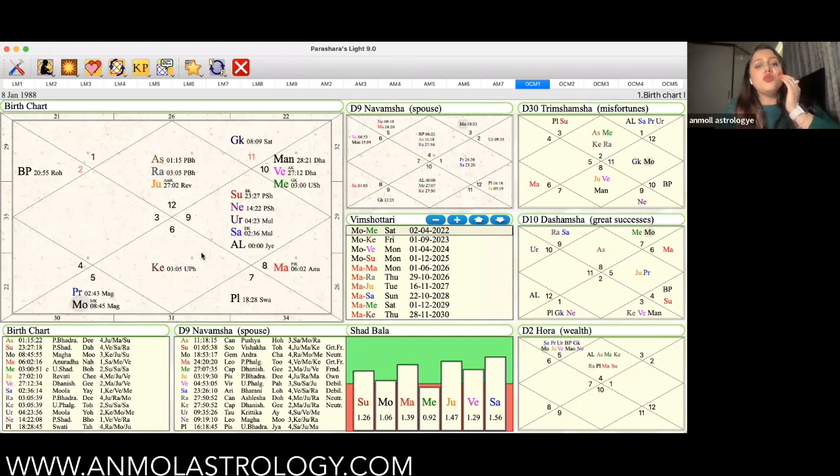So in this chart, the fifth Lord is in the sixth house, not the best placement. But the thing is that the seventh Lord is in the 11th house and it is aspecting the fifth house. The first Lord is in the first house and it is aspecting the seventh house.